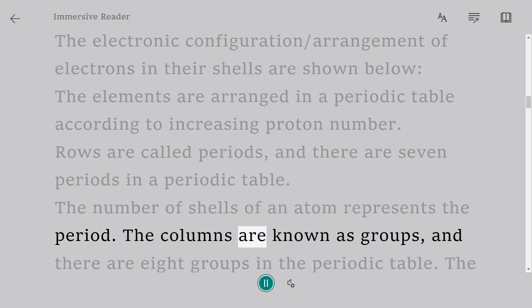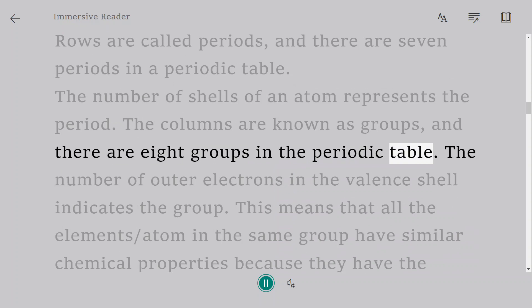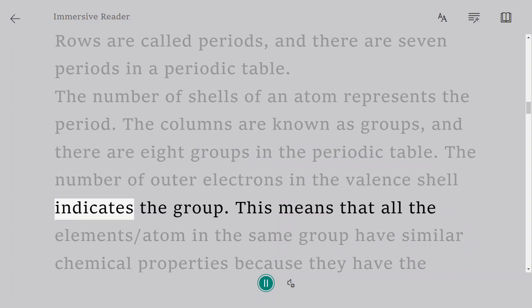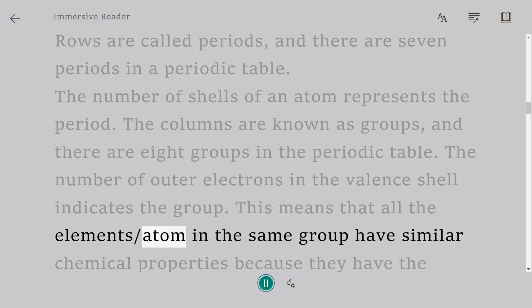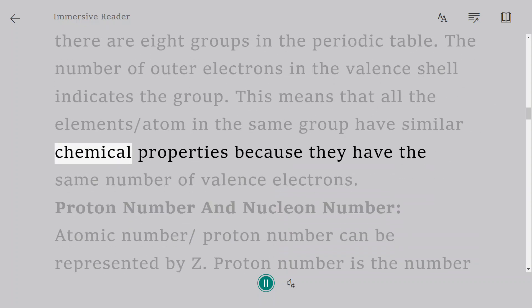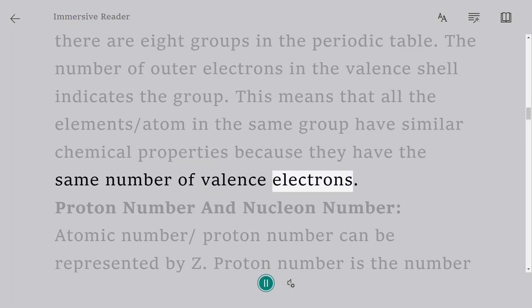The columns are known as groups, and there are eight groups in the periodic table. The number of outer electrons in the valence shell indicates the group. This means that all the elements/atoms in the same group have similar chemical properties because they have the same number of valence electrons.